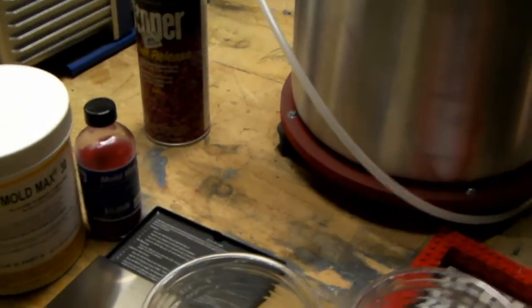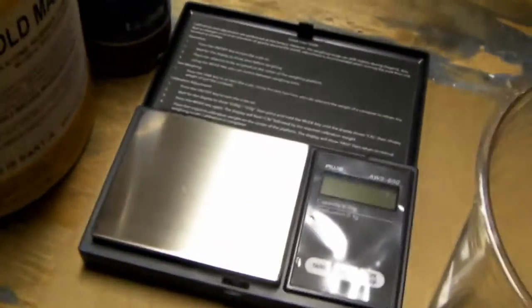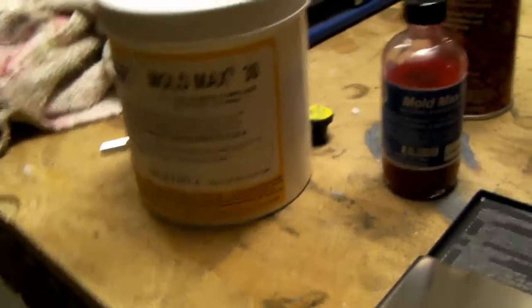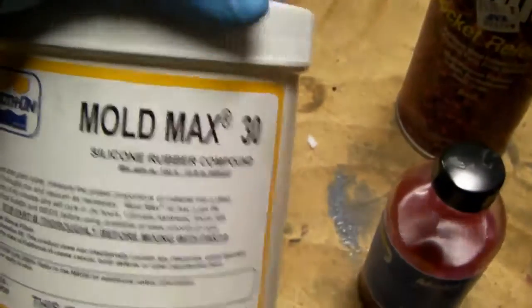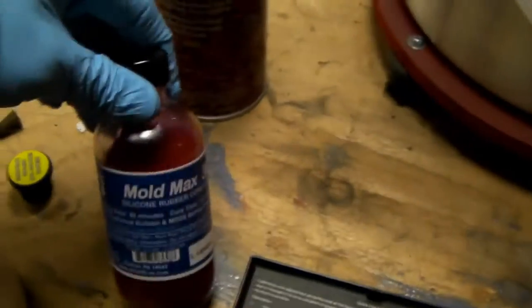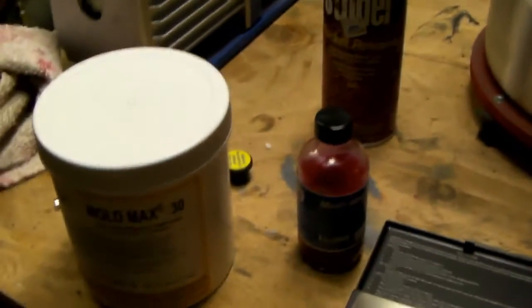I have my mold ready, my electronic scale, and the actual silicone. This is Mold Max 30 by Smooth-On. This is a 10 to 1 mix and they do recommend degassing.